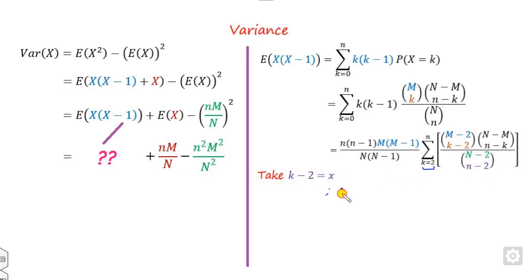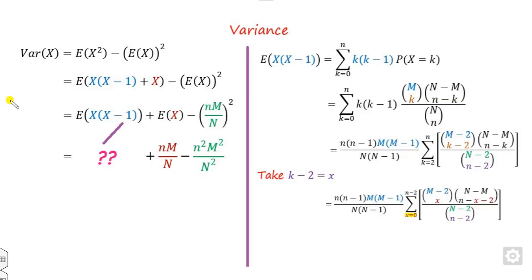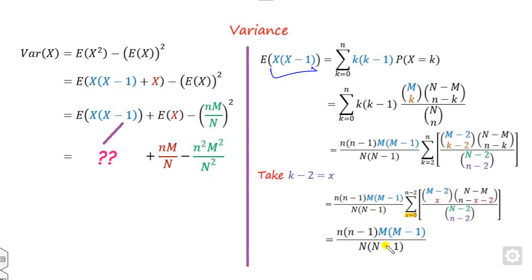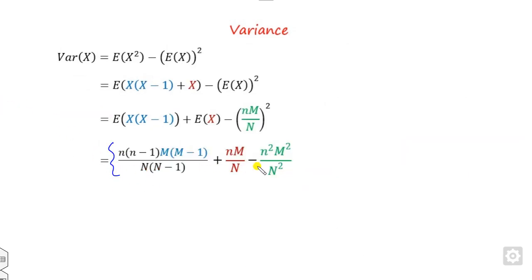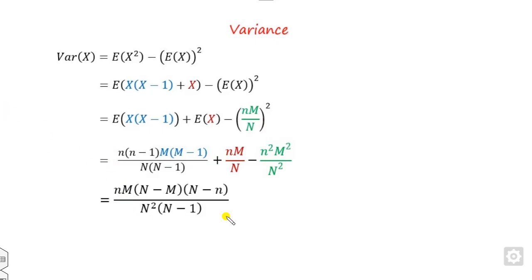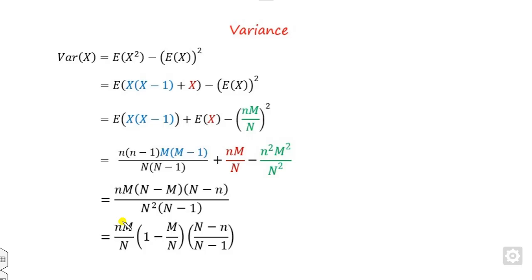Again taking k minus 2 as x, when k equals 2 the limit is 0, and when k equals n the upper limit becomes n minus 2. Substituting k equals x plus 2, the inner sum again becomes a hypergeometric PMF summing to 1. Substituting this result back and simplifying, we obtain the variance of the hypergeometric distribution, which can also be written in the form n times (M/N) times (1 minus M/N) times (N minus n)/(N minus 1).